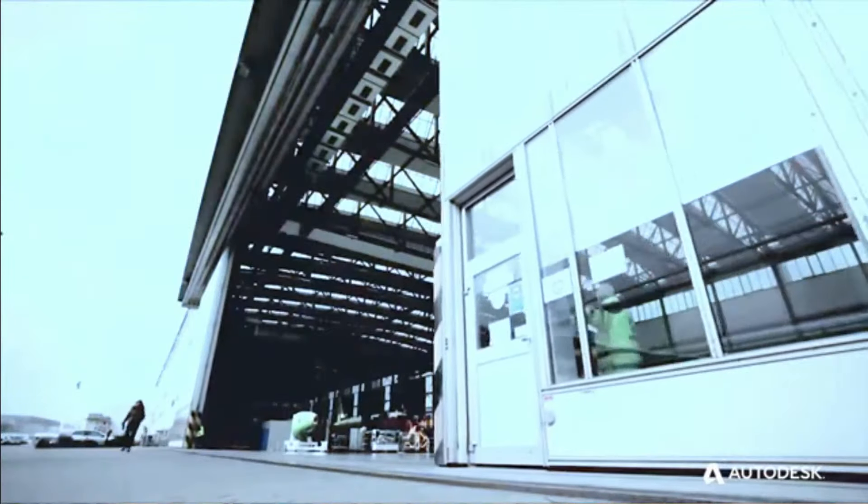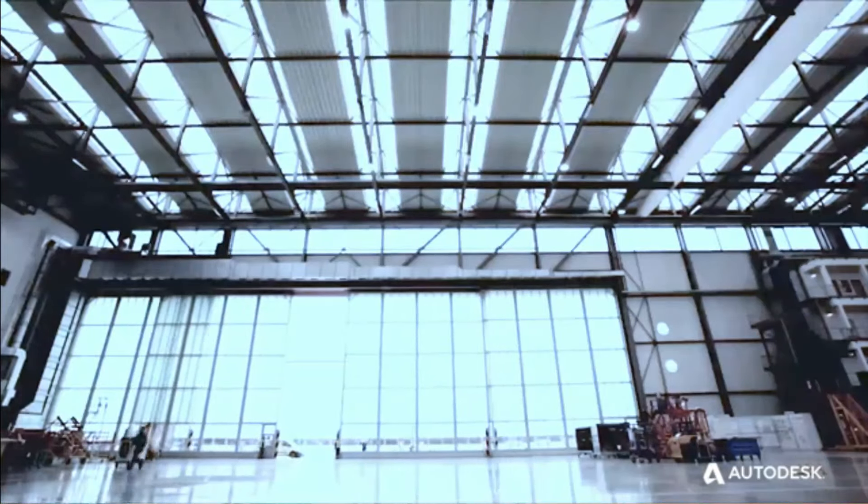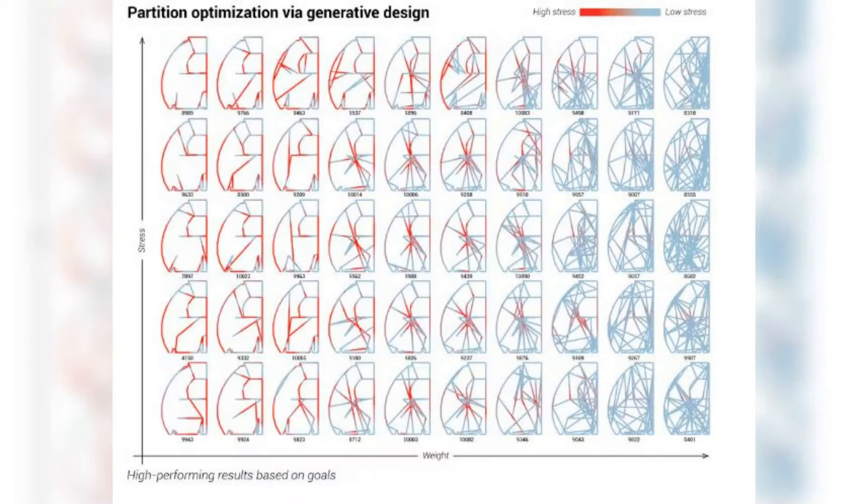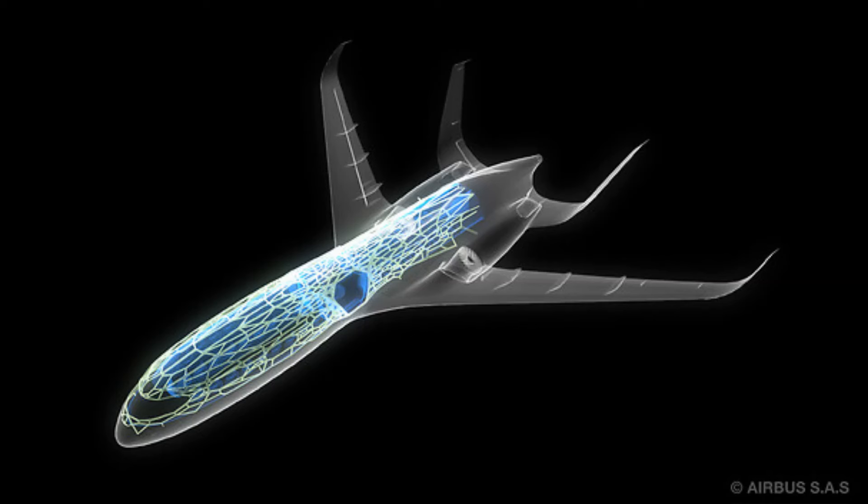Airbus estimates that the new carbon partition design can save up to 465,000 metric tons of carbon dioxide emissions a year. Because of its unique shape, Airbus calls it the bionic partition. The vision is now to have a whole bionic aircraft by the year 2050.